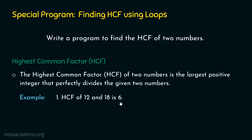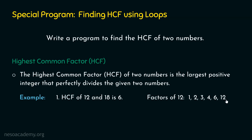Why not 3? Why not 1? Let's look at the factors of 12 and 18 and find out. Factors of 12 are 1, 2, 3, 4, 6, 12. These are all the factors of 12. What about the factors of 18? These are all the factors of 18: 1, 2, 3, 6, 9, 18.